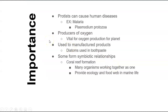Protists are important for us to study because, number one, some of them cause human diseases — for example, malaria is caused by a protist called Plasmodium protozoa. They are also important because they are major producers of oxygen on our planet. For example, algae and diatoms contribute to oxygen production on earth.